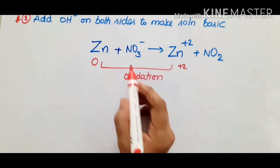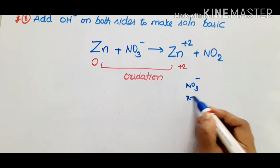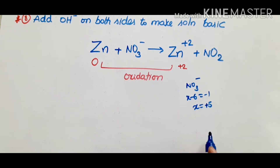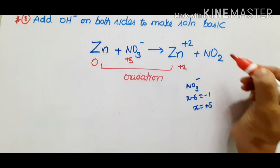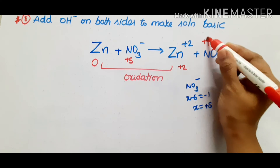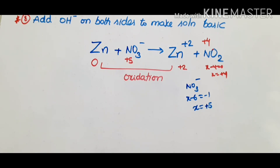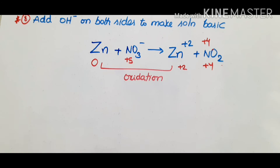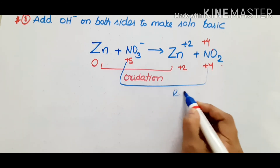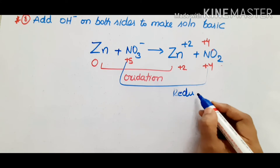Now for NO3⁻: nitrogen in NO3⁻ has oxidation state x - 6 = -1, so x = +5. In NO2, x - 4 = 0, so x = +4. The oxidation state of nitrogen is reduced from +5 to +4, so this is a reduction reaction.